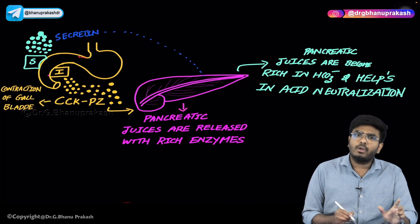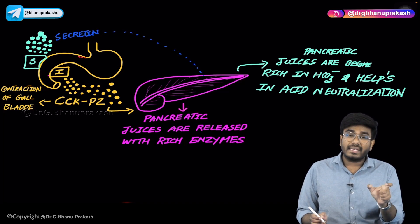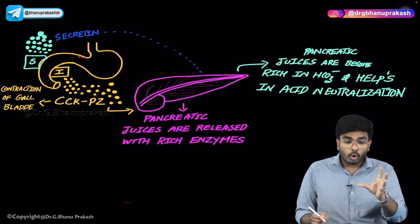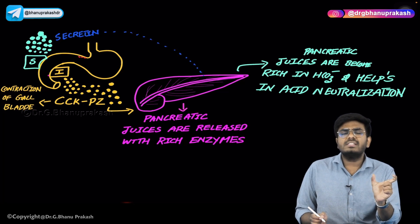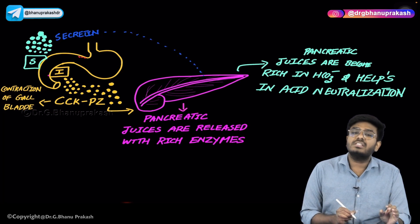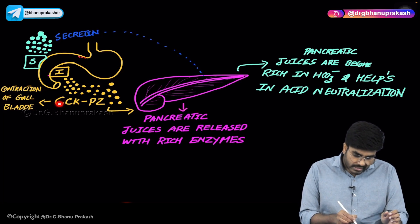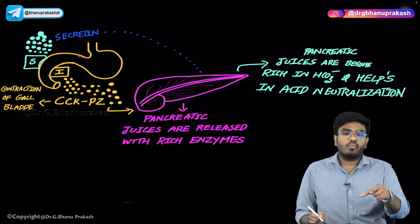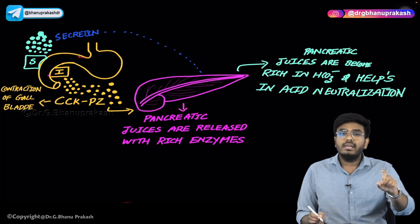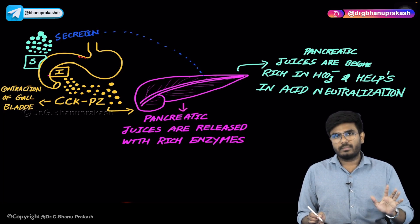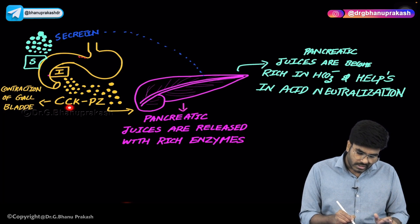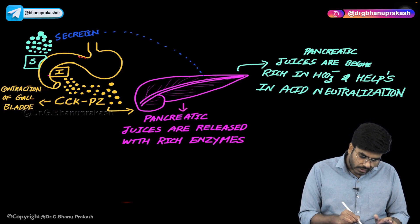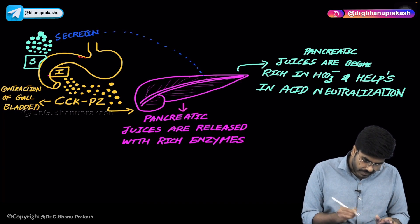CCK stands for cholecystokinin. 'Kinin' means kinetics, meaning movement — specifically cholecyst movement. Cholecyst is nothing but the gallbladder. So cholecystokinin causes contraction of the gallbladder, and whatever bile is stored inside the gallbladder leaks into the duodenum. So I cells release cholecystokinin-pancreozymin, which acts on the gallbladder, helps in gallbladder contraction, and triggers release of bile.